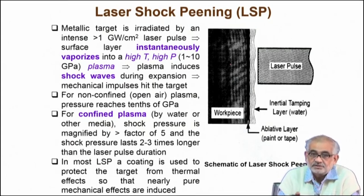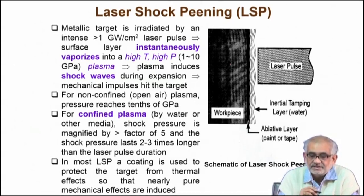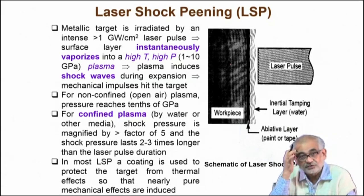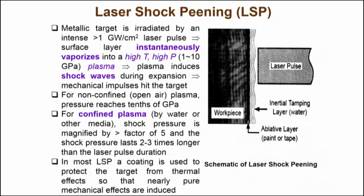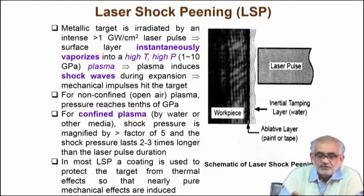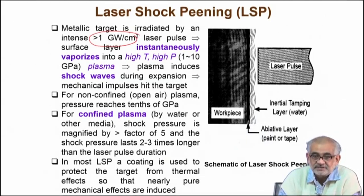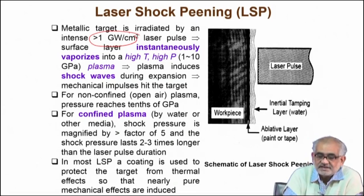In either shot peening or ultrasonic shock pinning — where propulsion comes purely from ultrasonic waves — in both cases there is physical contact of the shots, needles, pins, or wires with the surface. In certain cases where we do not want such localized deformation, indentations, or ripples, and want the deformation zone to be wider, we can go for a more sophisticated technique using a targeted laser beam of very high power density, typically gigawatts per centimeter squared.